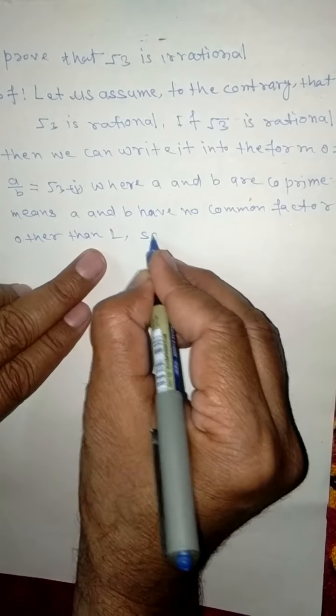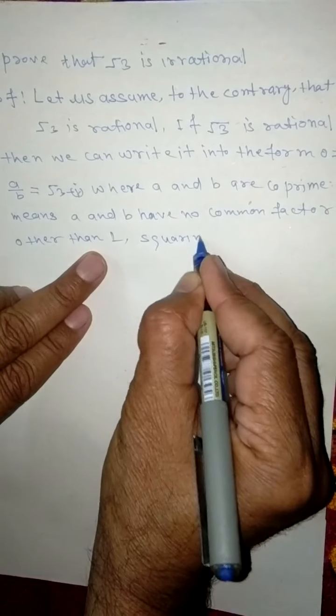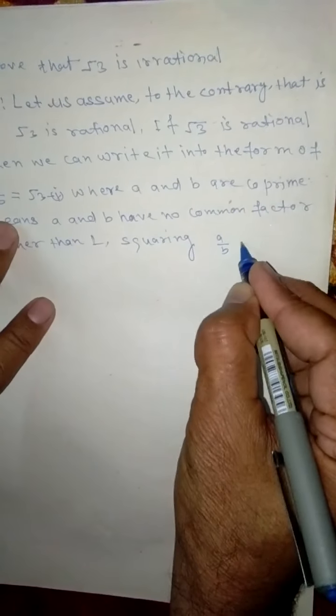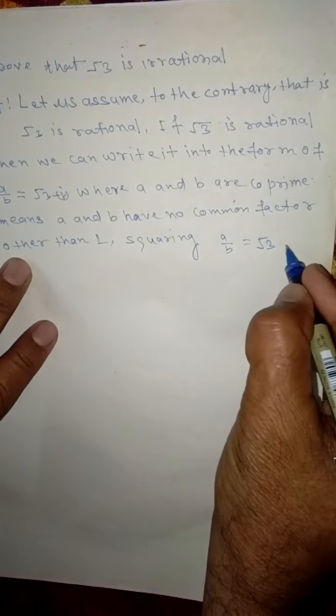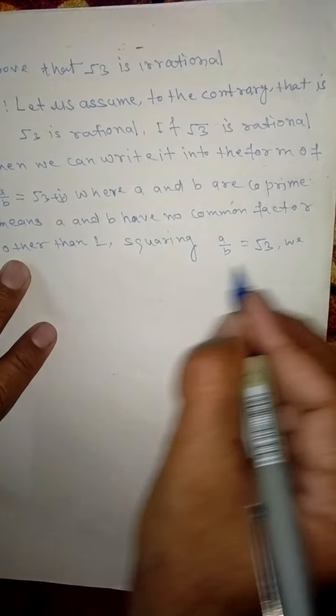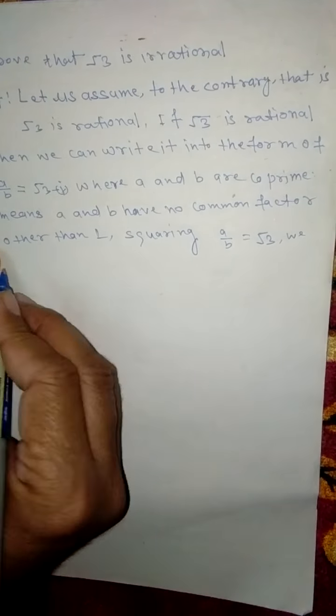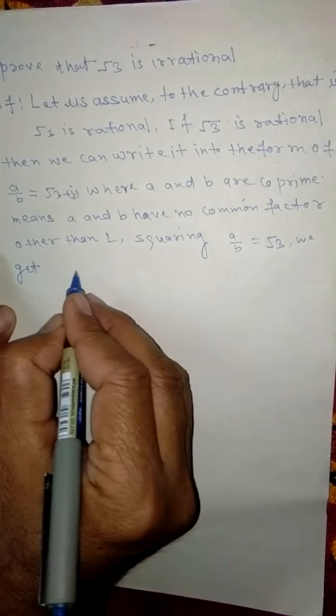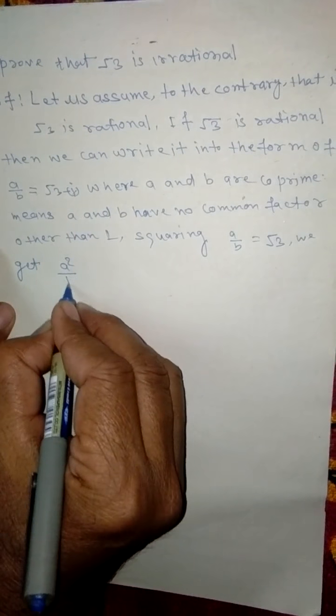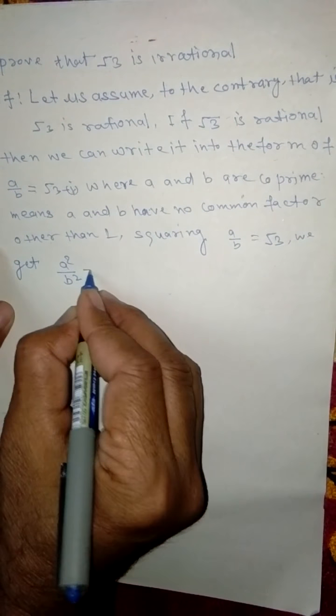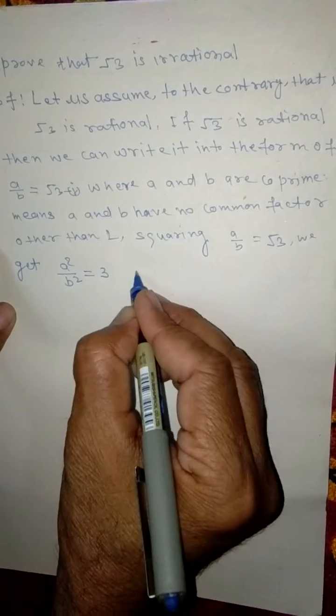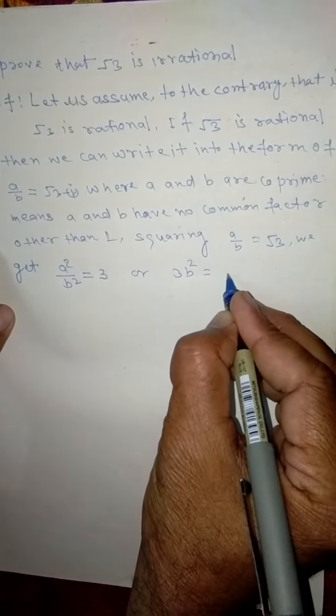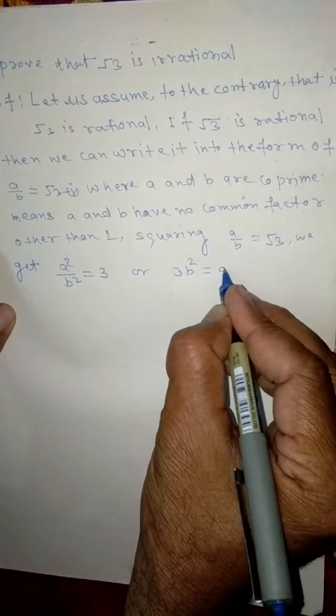Then squaring A by B is equal to root 3, we get A square by B square is equal to 3, or 3B square is equal to A square.